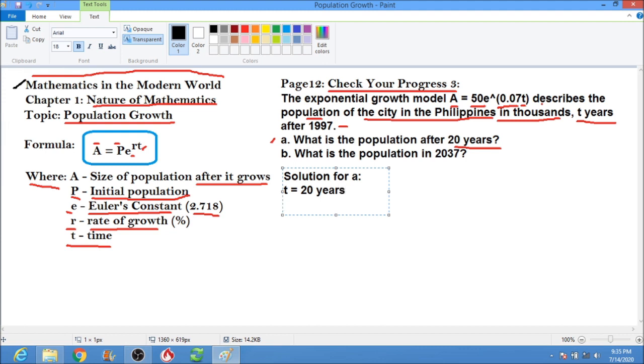Therefore, substituting that formula, we have A equals 50 times 2.718 raised to 0.07 times t. And our t equals 20 years. So this is 0.07 times 20 years.